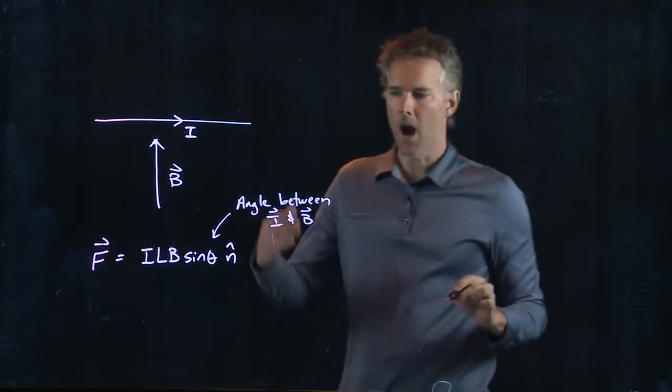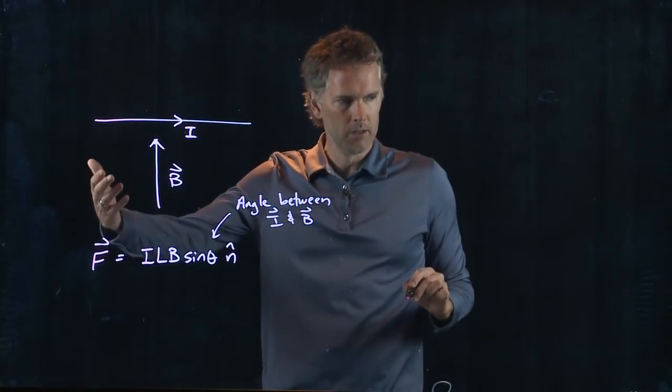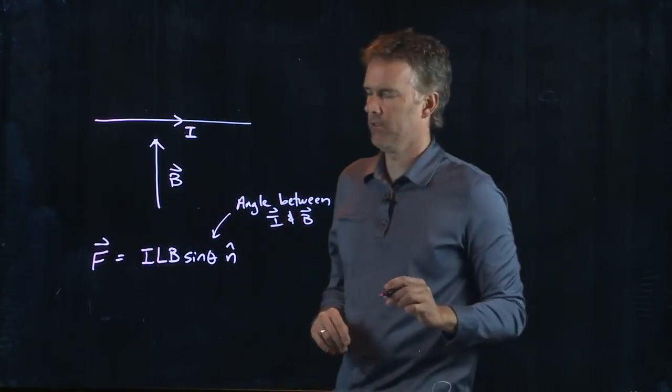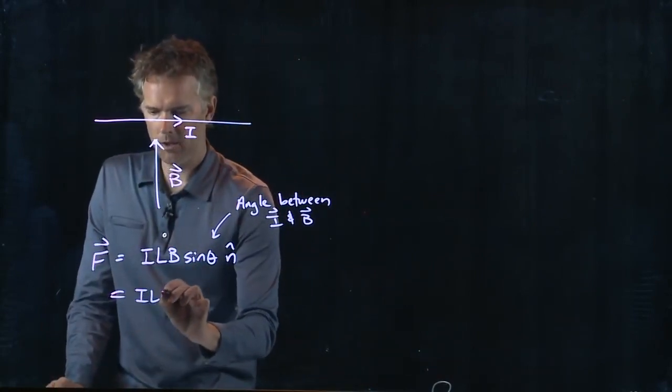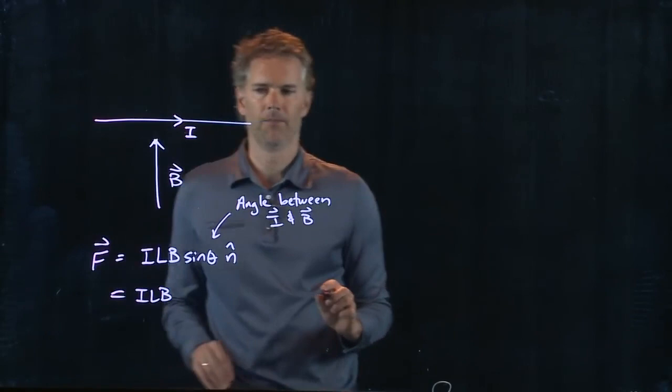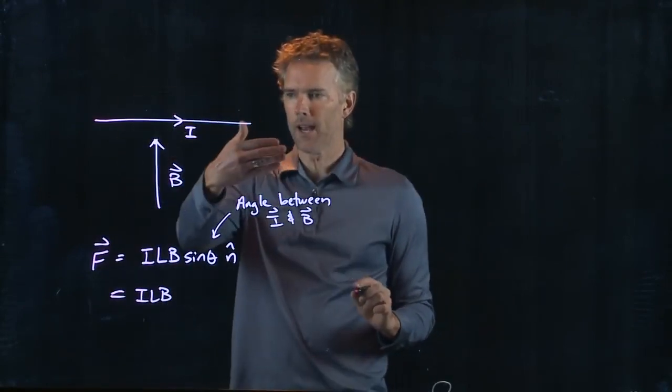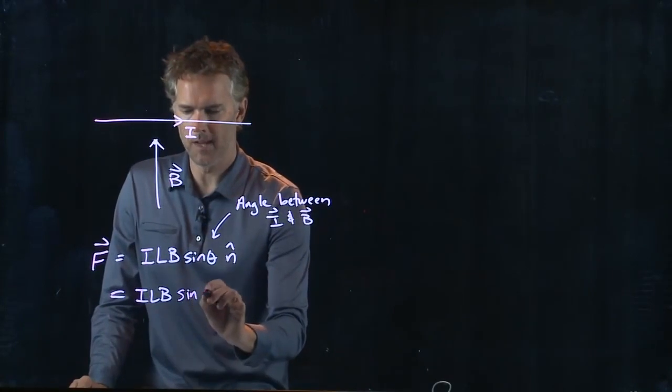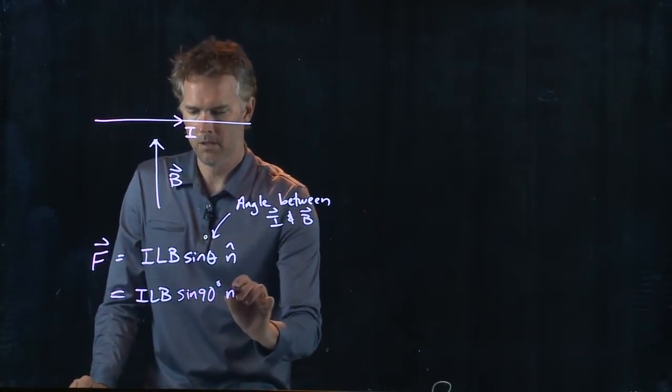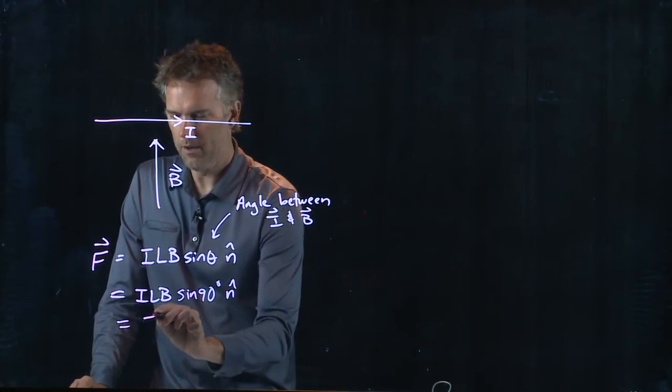Theta now is the angle between I and B. I becomes like our QV. B is still the magnetic field, of course. So in this problem, what is the angle between those two? Well, I is to the right, B is up, so the angle between them is 90 degrees, which is just one.